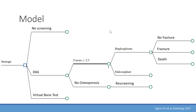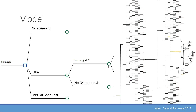This is just a simplification of the model we eventually developed — please check the original publication for full detail. In such a model you need to simulate the underlying disease in very high detail. You can see the three strategies: no screening, DEXA screening, and virtual bone test screening, with decision nodes for each path. For example in the DEXA branch: if osteoporosis is detected (T-score ≤ −2.5) the woman receives treatment and has a lower fracture risk; if not, she is recalled for rescreening. You can see it gets big and complicated pretty fast.